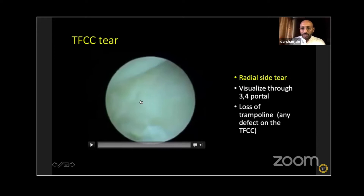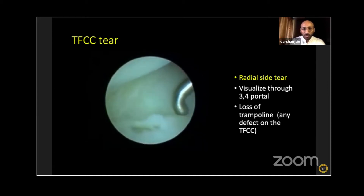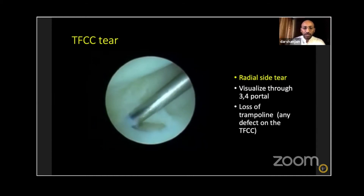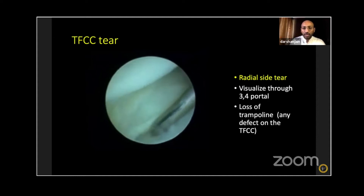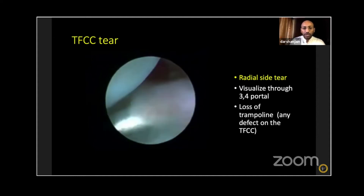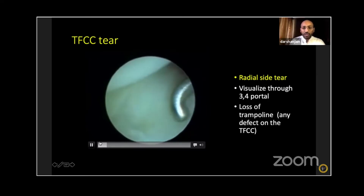This is a TFCC tear where you are visualizing from the 3-4 portal and checking for the trampoline effect. There are various classifications, but I'm showing one on the radial side where you can see the ulnar head through the tear. Loss of the trampoline effect is the key identifying technique to determine if the TFCC is torn on the radial side.